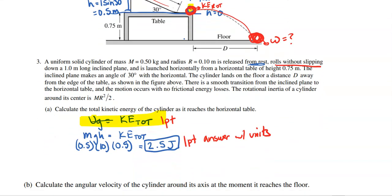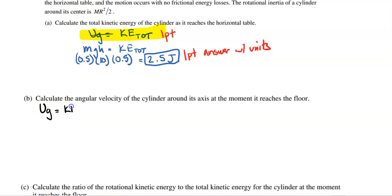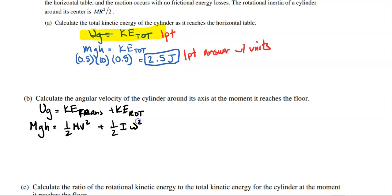We set up: UG equals KE translational plus KE rotational. So mgh equals ½mv² plus ½Iω². We know I equals ½mr² for a solid cylinder, and we don't want a linear velocity at the end — just angular velocity. Keep in mind the rolling relationship: v equals ωr.